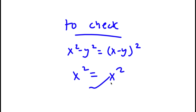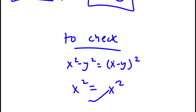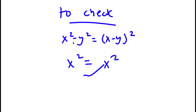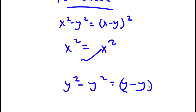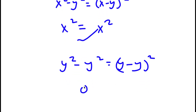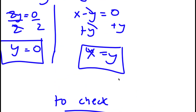Checking y equals 0: x squared minus 0 equals x minus 0 squared, giving x squared equals x squared — correct. Checking x equals y: replacing x with y gives y squared minus y squared equals y minus y squared, so 0 equals 0 squared, which is 0 equals 0 — correct. Both solutions are valid.